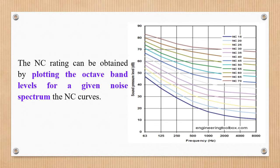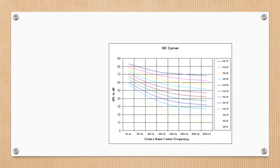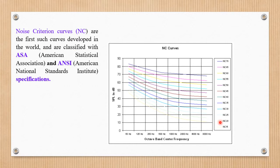In this graph, we represent the frequencies on the axes and the sound pressure level in decibels. This is on another graph, which is a rapid octave band graph of center frequencies, showing various frequencies with different decibels of sound pressure levels. The noise criteria curves are the first such curves developed in the world and are classified with ASA — American Statistical Association — and ANSI — American National Standard Institute specifications.